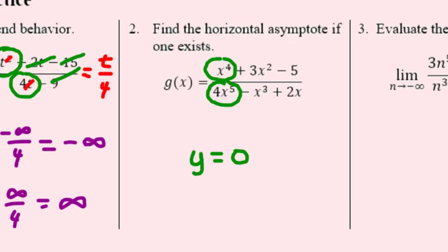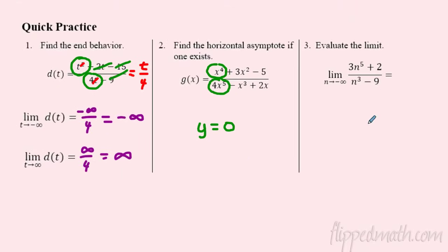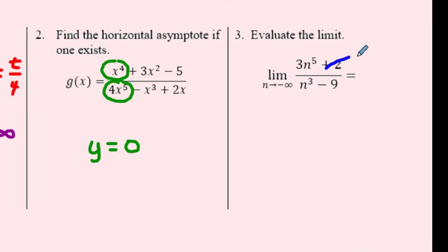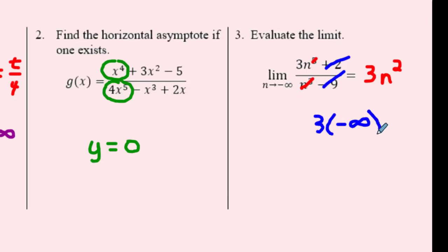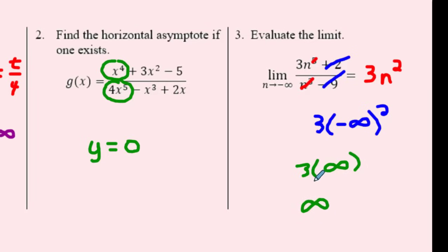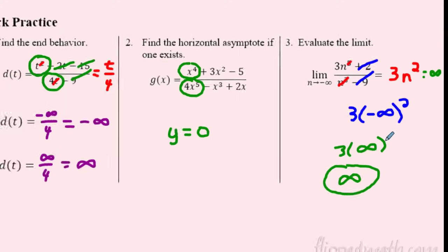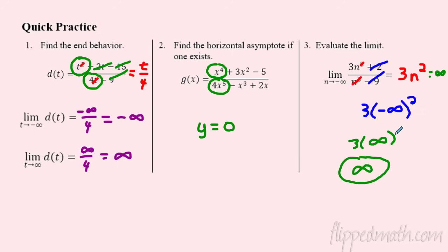Number two — horizontal asymptote: x to the fourth on top, x to the fifth on bottom. The denominator dominates — it goes to zero. Horizontal asymptote at y = 0. Number three — plug negative infinity in. I only care about the highest powers; the three x's cancel three of those, leaving 3n squared. Now plug in: three times negative infinity squared — squaring a negative makes it positive. Three times infinity is just infinity. The limit goes to positive infinity. Watch your signs — that can be tricky. Check the practice on the master sheet!